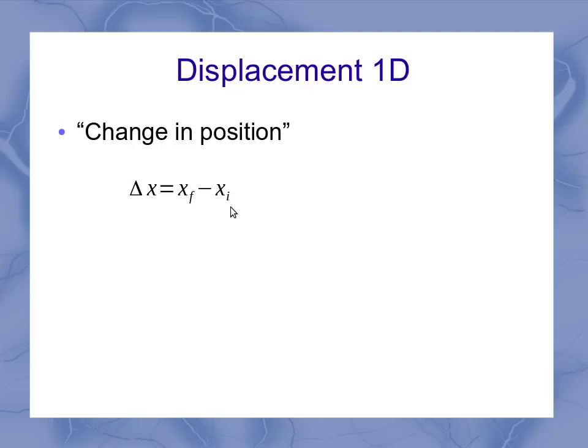This is if I'm using a horizontal line. If I had a vertical line, then my displacement was delta y, with y final minus y initial. Both of these cases were vectors because it mattered whether I ended up having a plus or a minus, whether I was moving to the left or the right or up or down.